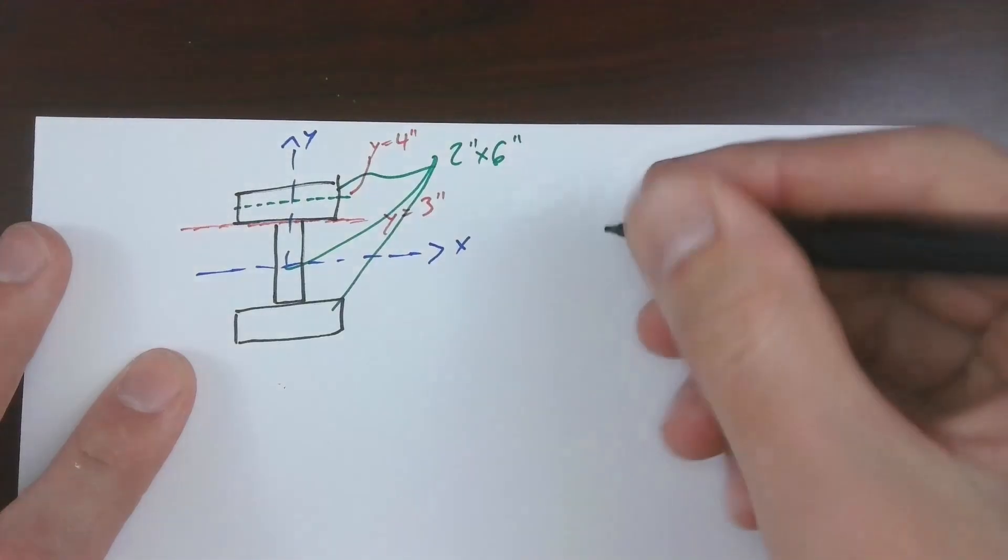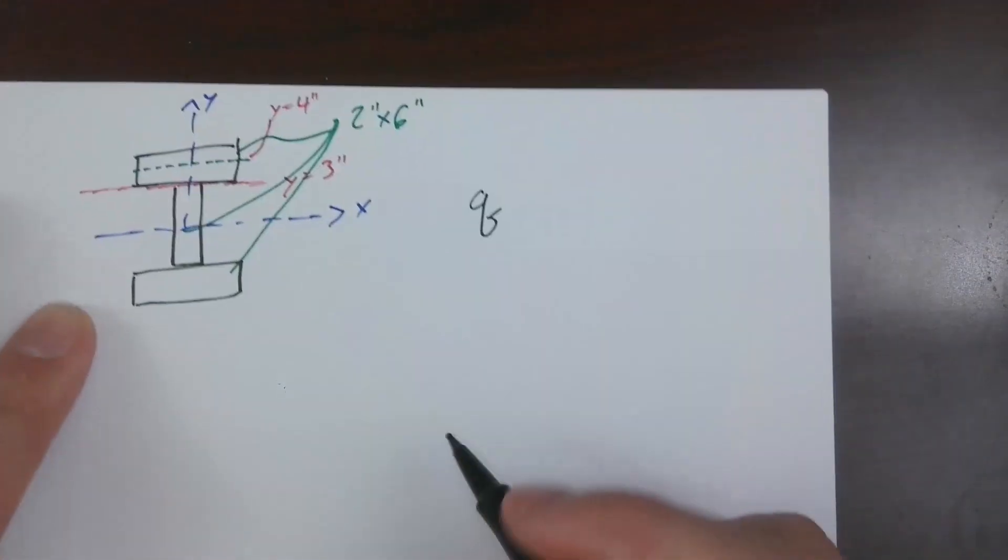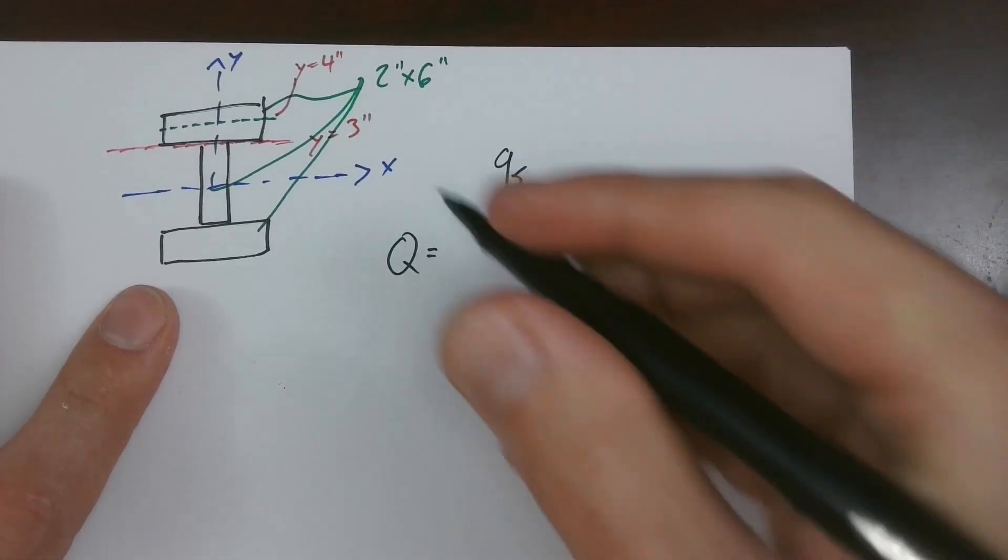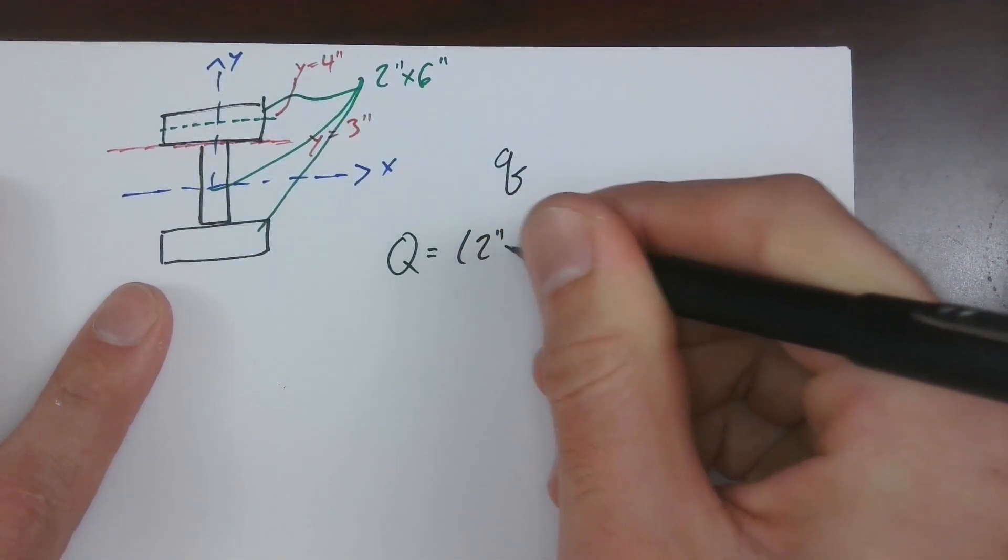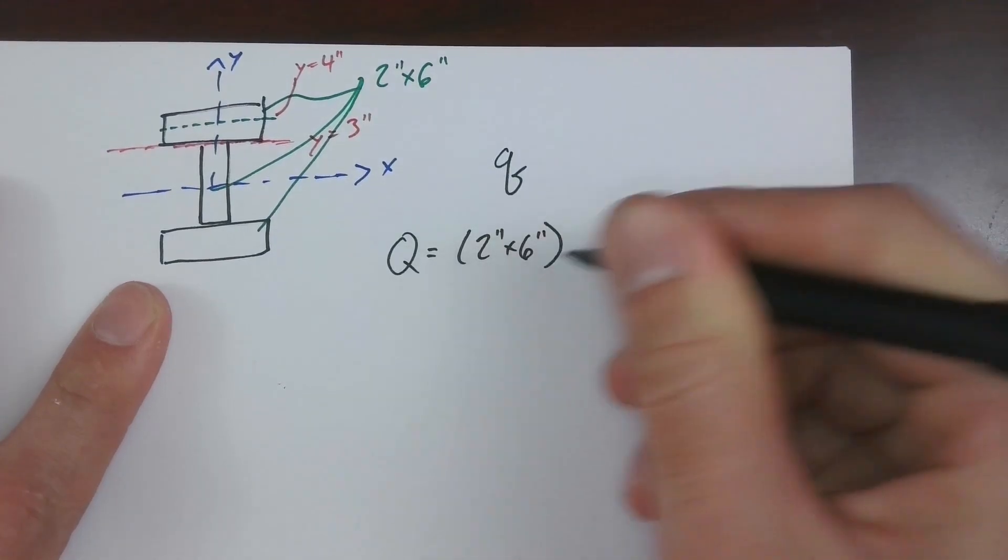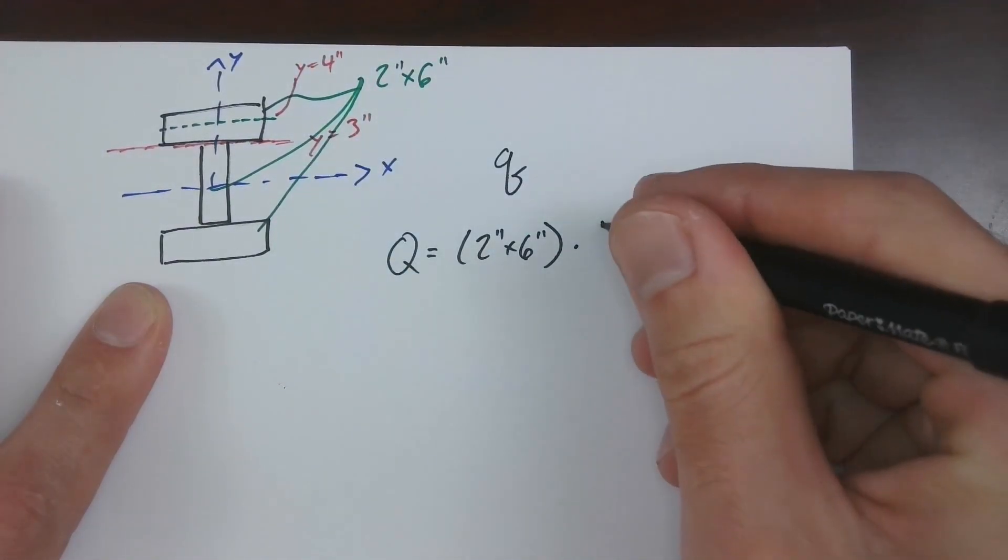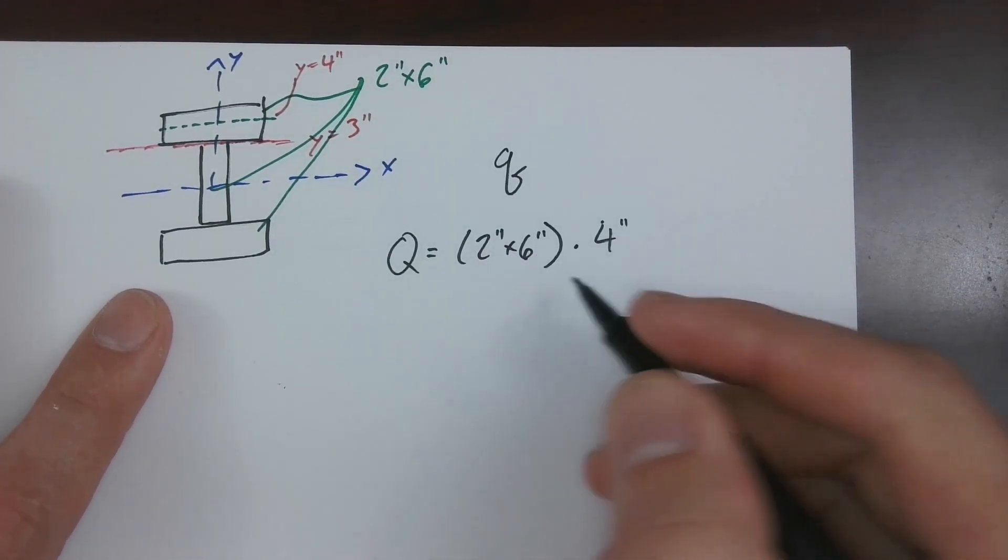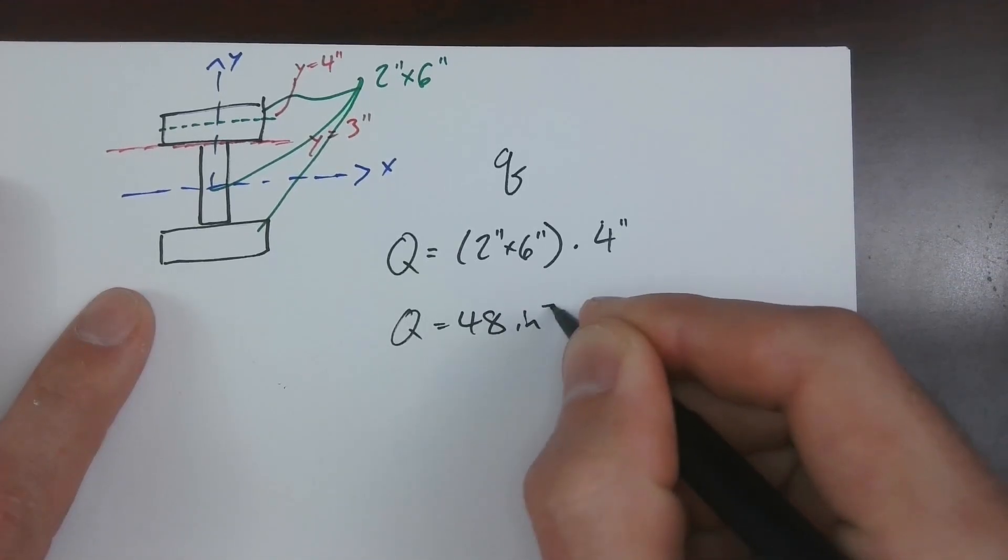So we have the centroid of the area outboard of our section of interest. Our section of interest here is located at y equals three inches. And our neutral axis of the outboard section here is at y equals four inches in this case. So here, we'll come back to that Q, but Q, big Q is equal to, so we've got our area, which is two inches times six inches times our distance, which is just going to be four inches up. So we've got 12, 48, Q is equal to 48, which is cubed.